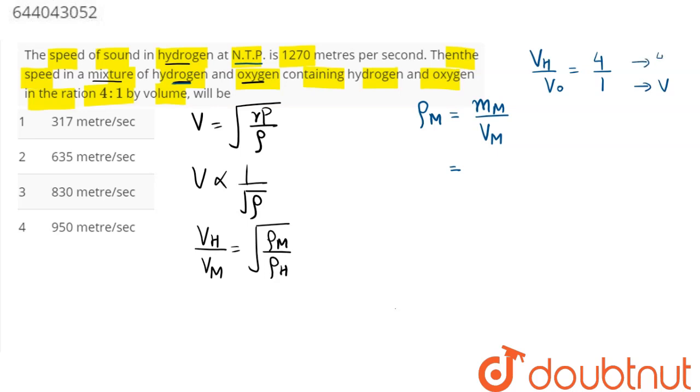Now coming to the mass of mixture, this can be written as 4v into 1 plus, since it is in NTP, plus 1v for hydrogen into its molecular weight.